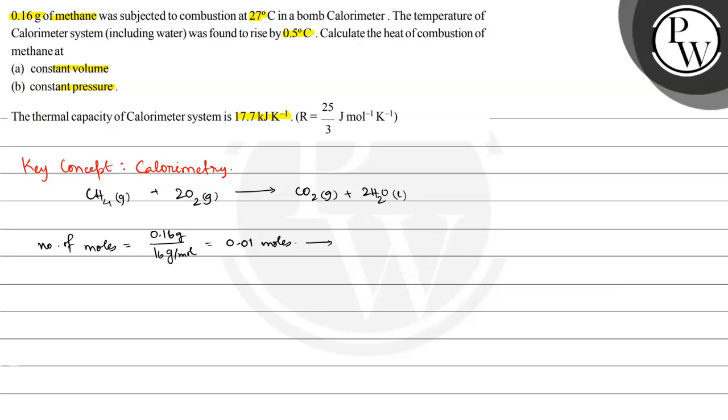The heat released is Q, which is heat capacity multiplied by the temperature rise ΔT. This equals 17.7 kJ/K multiplied by ΔT of 0.5°C. Since we're measuring a difference, degrees Celsius and Kelvin are the same, so 0.5 K. This value equals 8.85 kJ for 0.01 moles.